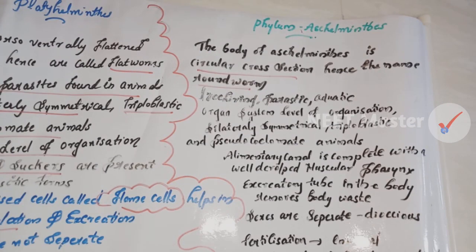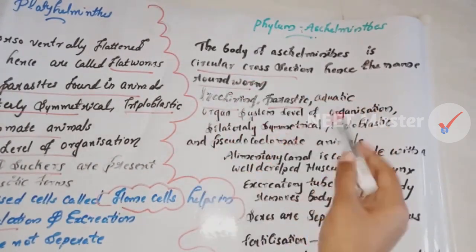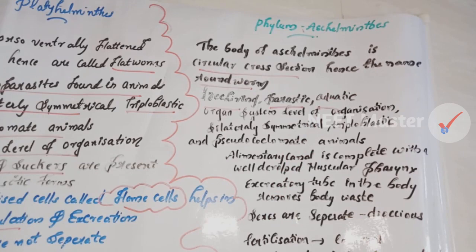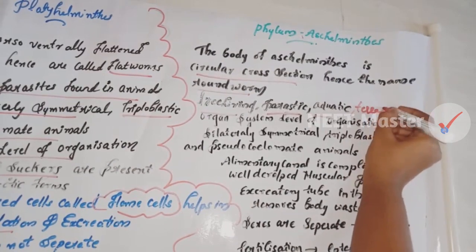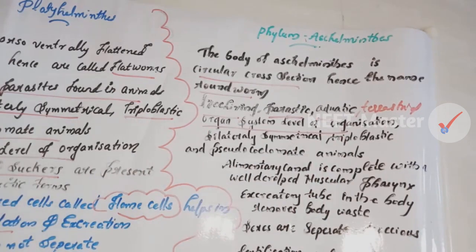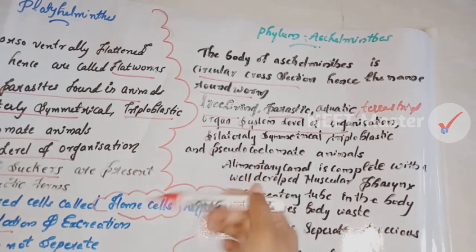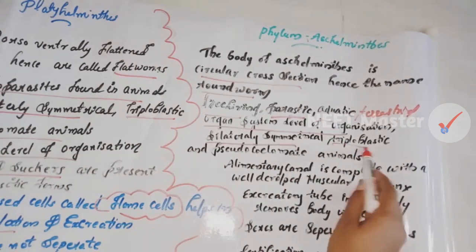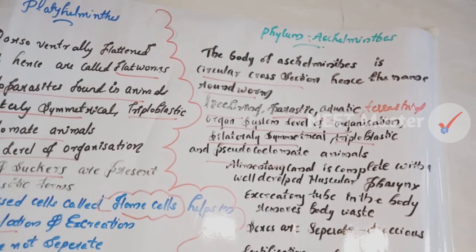Aschelminthes can be aquatic, terrestrial, or parasitic. The roundworm has an organ system level of organization, which is a high level. It is bilaterally symmetrical, triploblastic, and pseudocoelomate — meaning it has a false body cavity called a pseudocoelom.